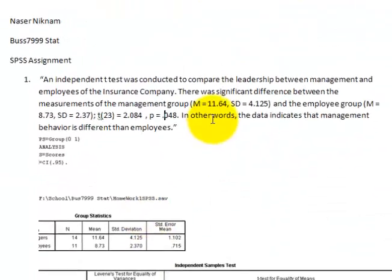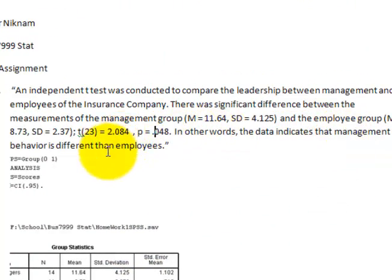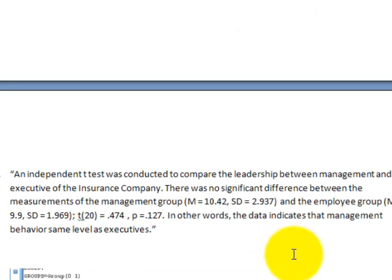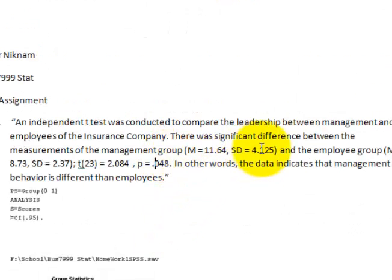But the way you word it — the data indicates that the management behavior is different than employees — you've got to be careful about that. What we're really trying to say is if there's a significant difference in employee scores over management scores. A better way to put it would be: the data indicates that there was no significant difference between the management scores and the employee scores. And the same down here — the data indicated that there was no significant difference between the levels of the executives and the management. And this one up here was: there was a significant difference between the employees and the management. So try to use that when describing your data — was there a significant difference or not in whatever the dependent variable was?